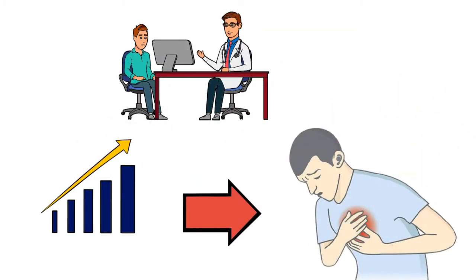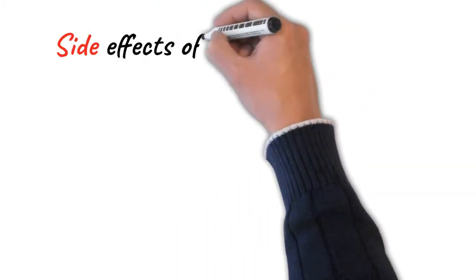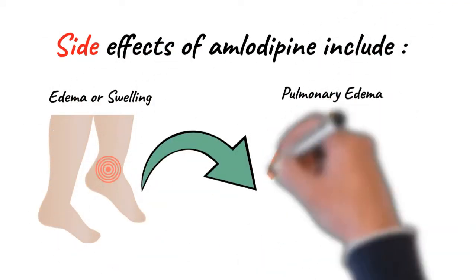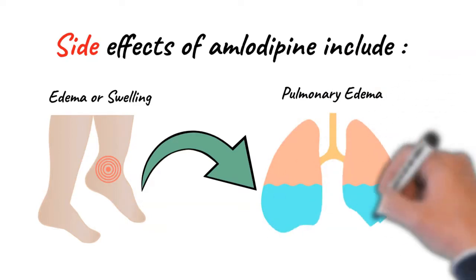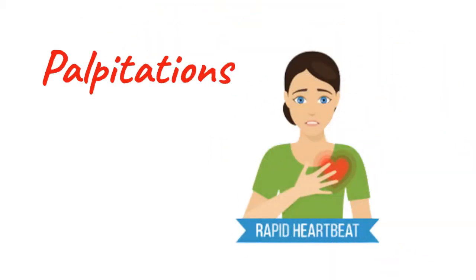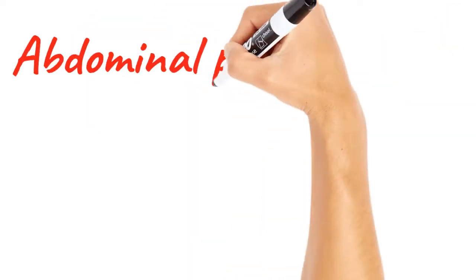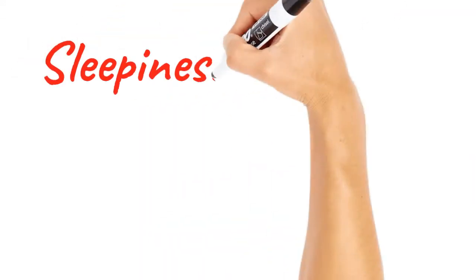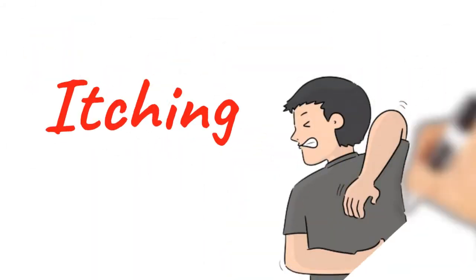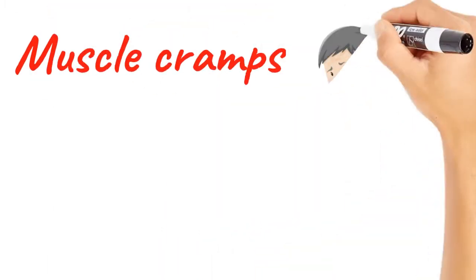Let's see the side effects of amlodipine. Side effects of amlodipine include edema or swelling, pulmonary edema or excess fluid in the lungs, headache, fatigue, palpitations, dizziness, nausea, flushing, abdominal pain, sleepiness, male sexual disorder, drowsiness, itching, skin rash, muscle cramps, and muscle weakness.